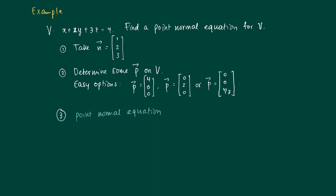For the plane V, a point-normal equation reads: the inner product of n with x equals the inner product of n with P. Well, n and P are given, so we may calculate: P is 4, 0, 0 and n is 1, 2, 3.